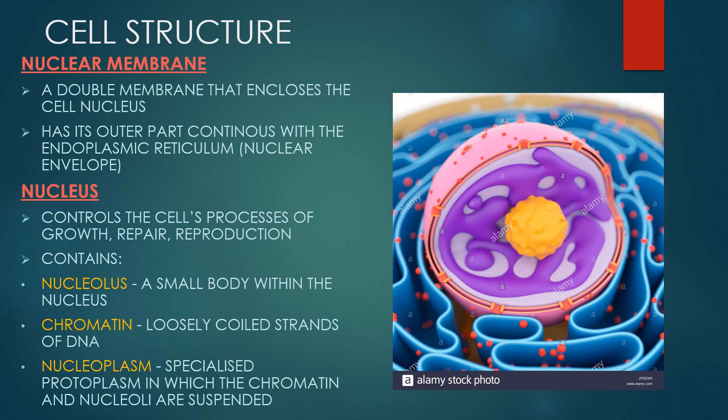A nuclear membrane is a double membrane that encloses the cell nucleus. It serves to separate the chromosomes from the rest of the cell. It includes an array of small holes or pores that permit the passage of certain materials such as nucleic acids and proteins between the nucleus and cytoplasm.